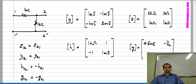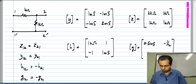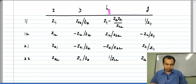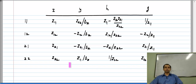Later in this unit we will go on to prove the reciprocity theorem, but for now I am just stating it. Here I have tabulated the relationship between different parameter sets, listing parameters 11, 12, 21, and 22, taking Z parameters as the primary means of representation and expressing all other two-port parameters in terms of Z parameters.